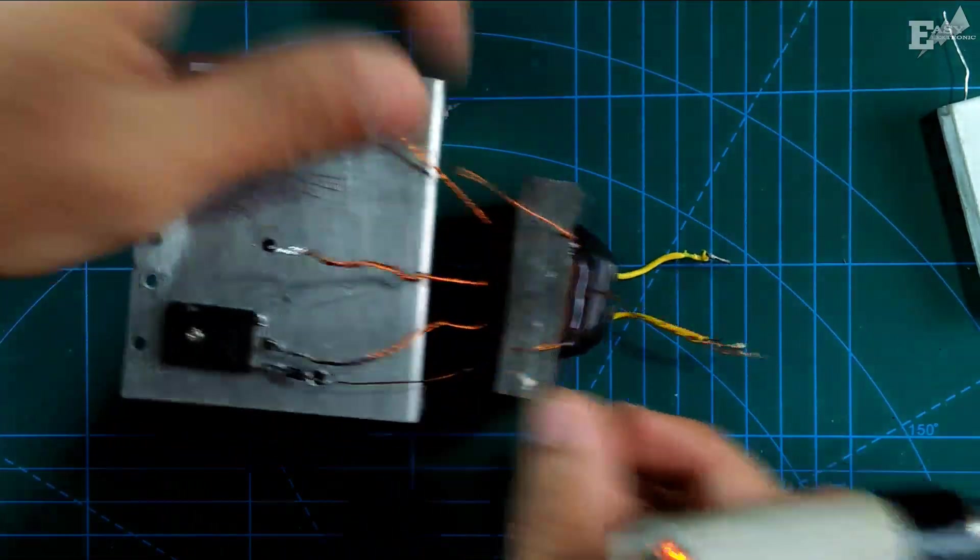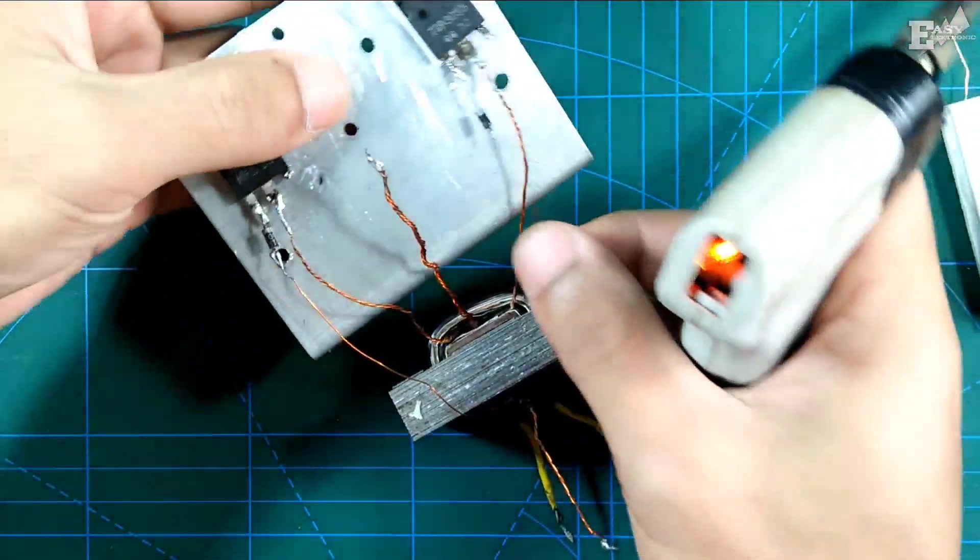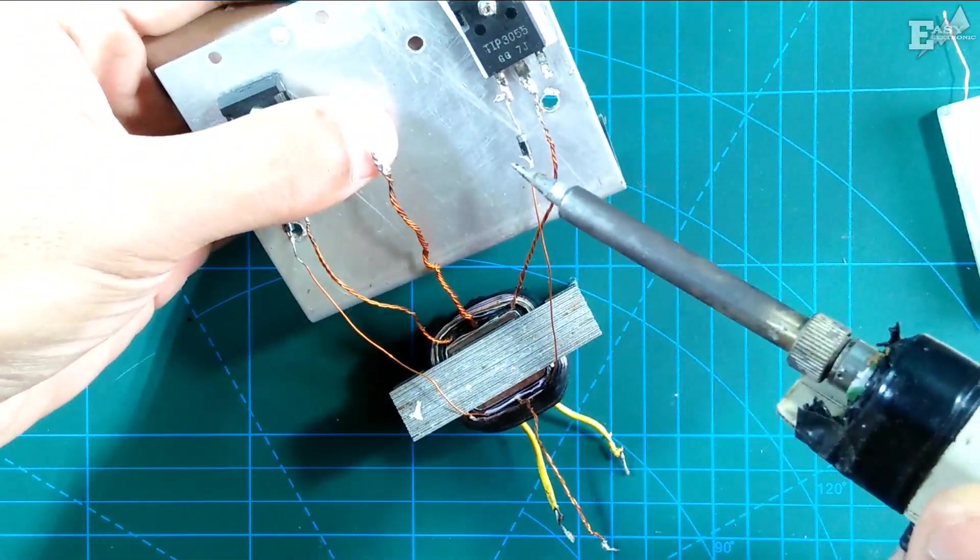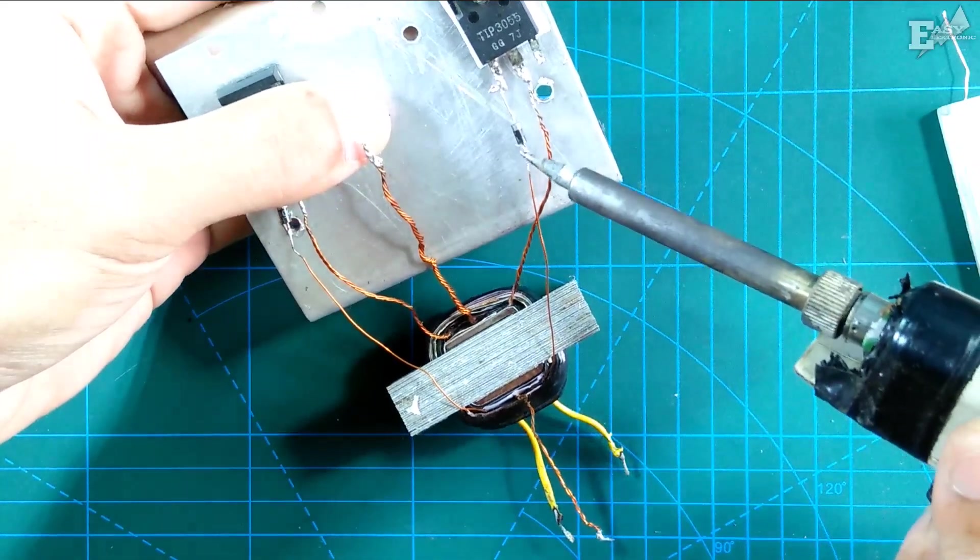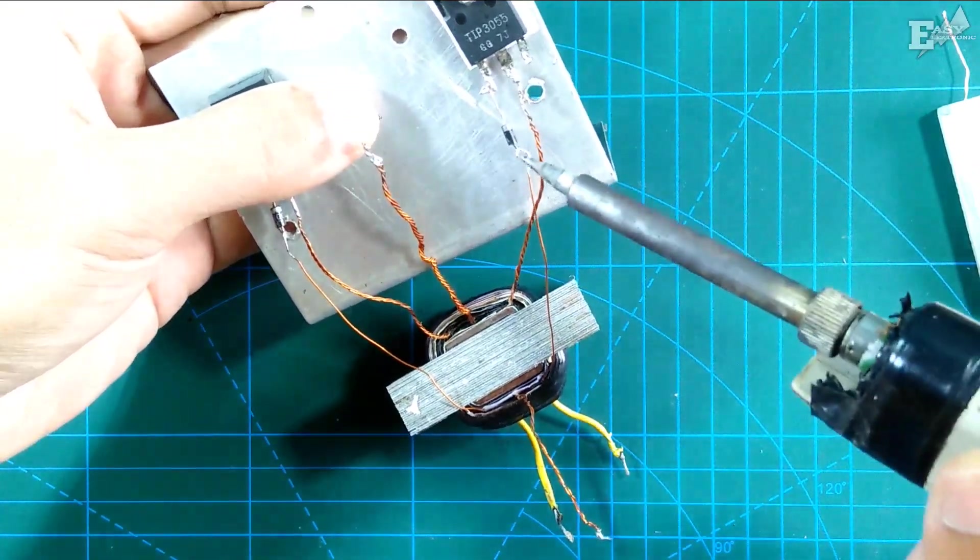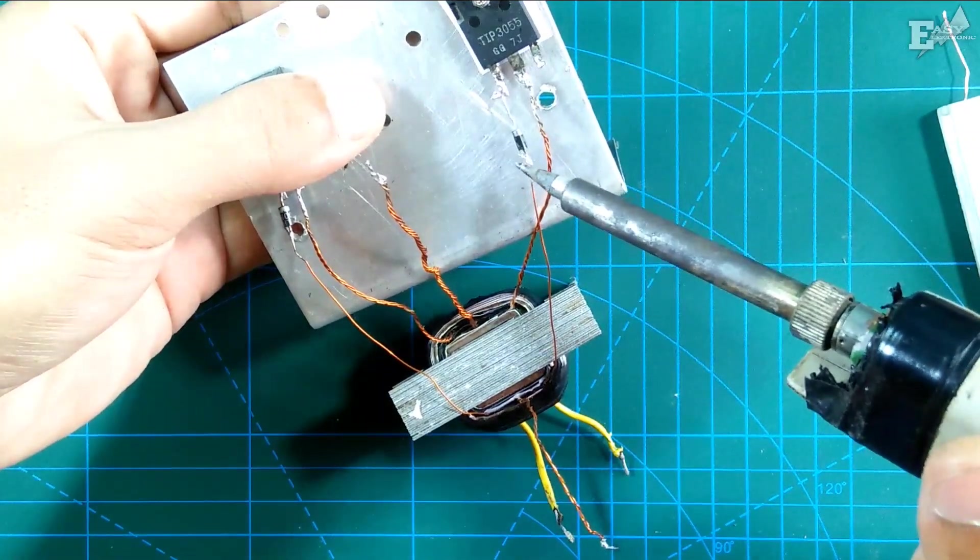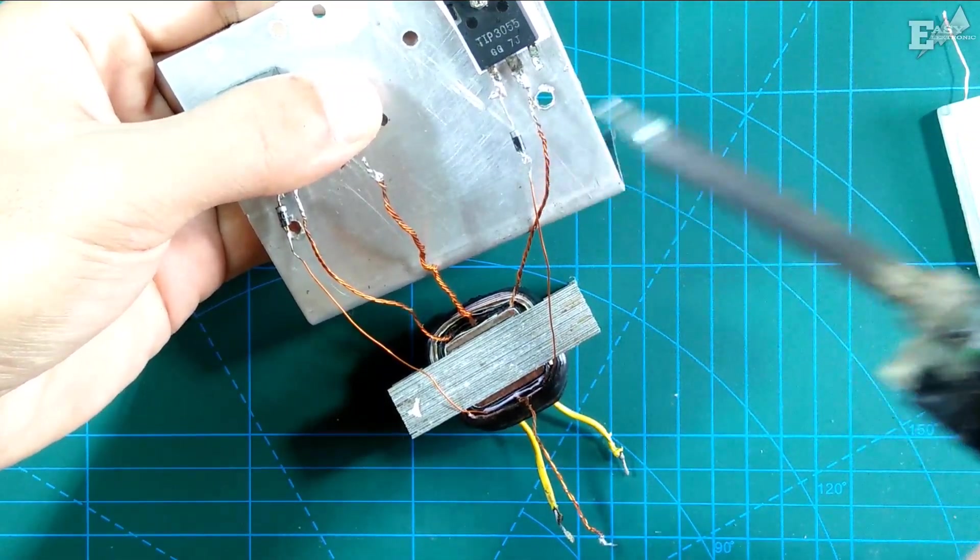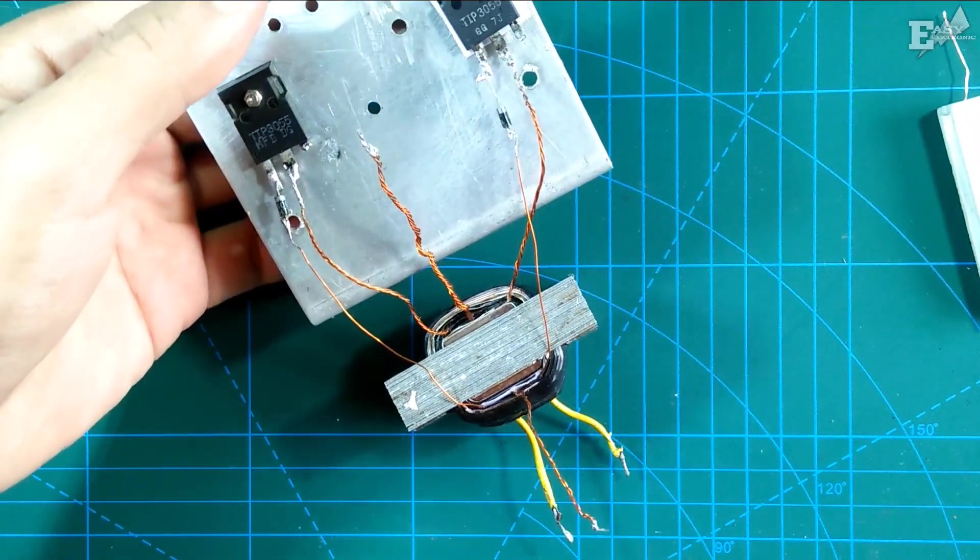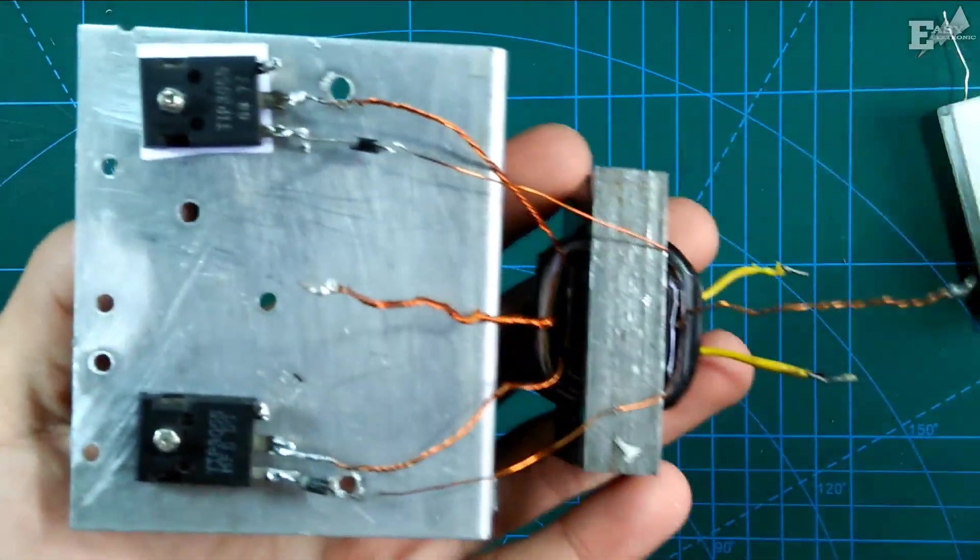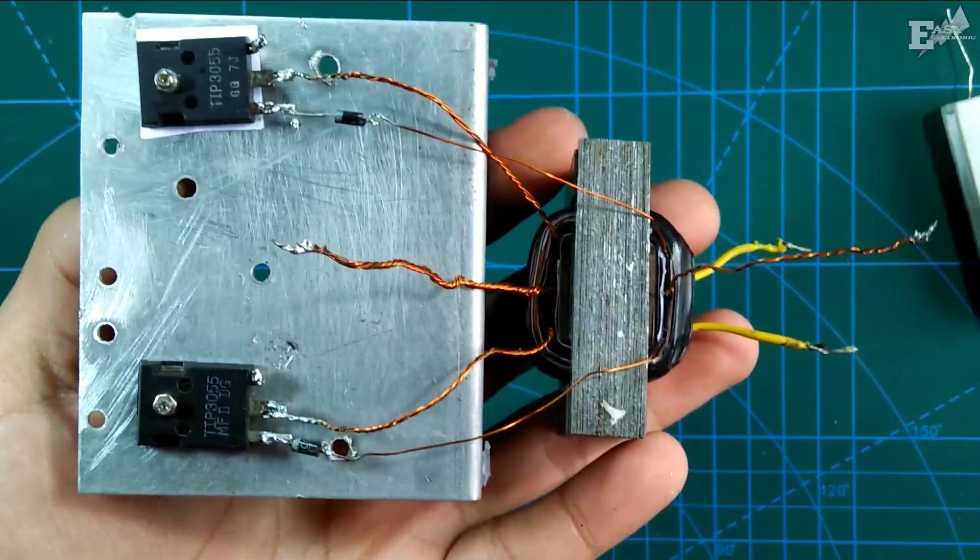And if it doesn't function or doesn't light up, this can be reversed for the feedback installation. You can just cross them. If it doesn't light up, so the left crosses to the right. No problem. And the transistor won't short either, even if it's reversed.